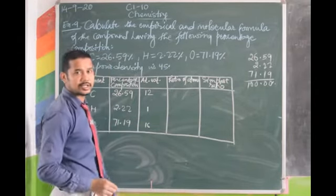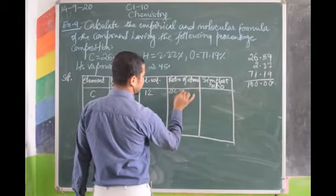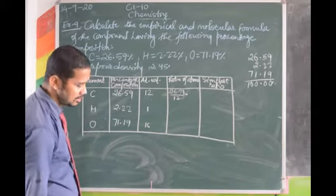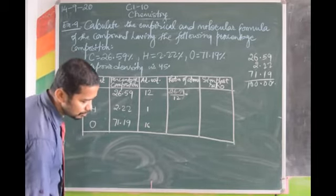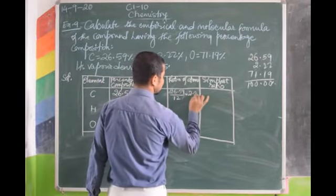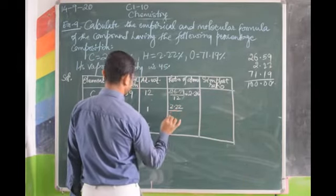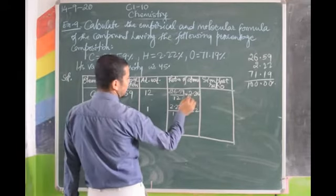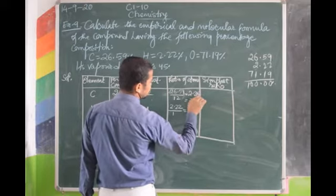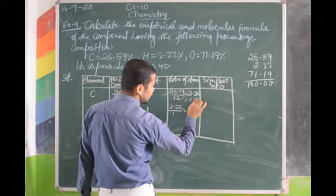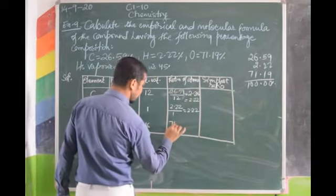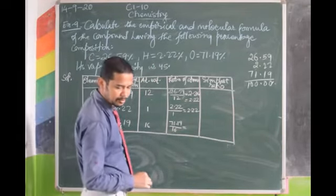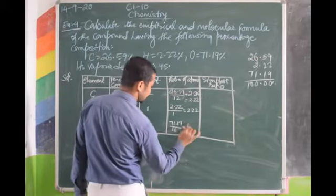Find the ratio: percentage ÷ atomic weight. So 26.59 ÷ 12 = 2.216, approximately 2.22. Then 2.22 ÷ 1 = 2.22. And 71.19 ÷ 16 = 4.45.